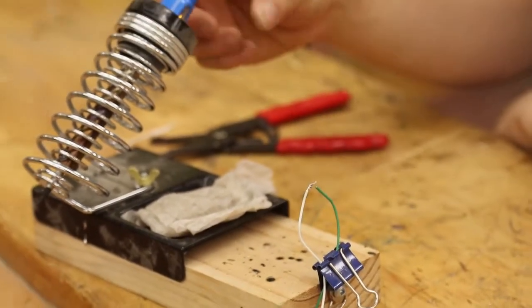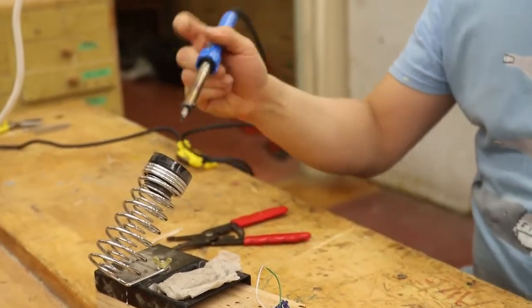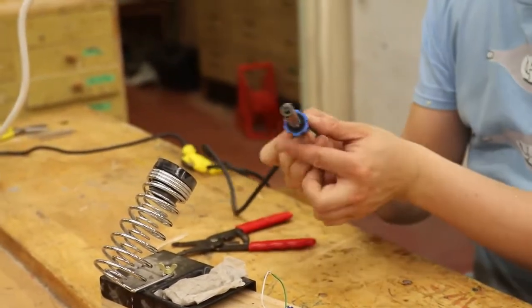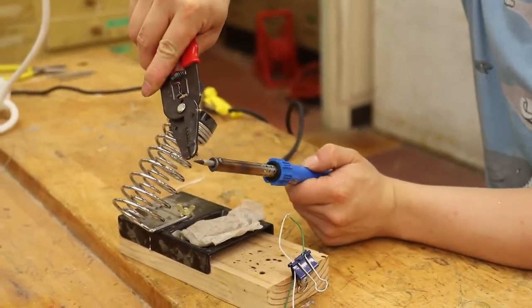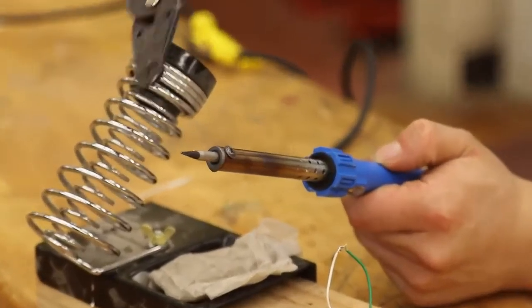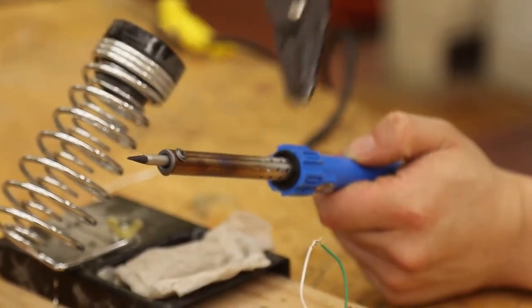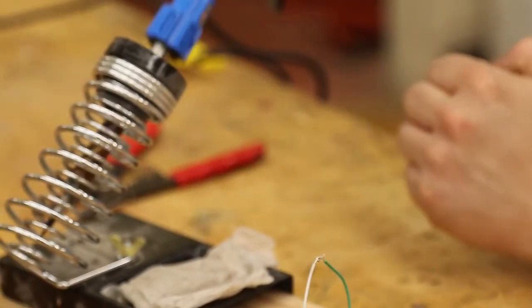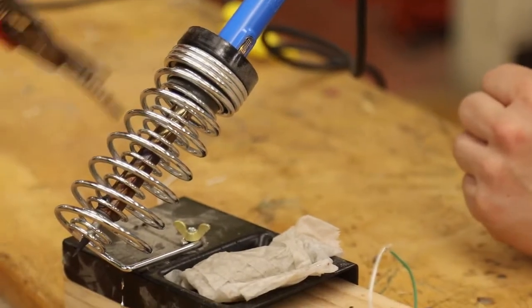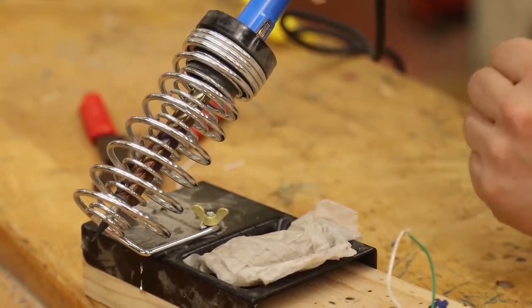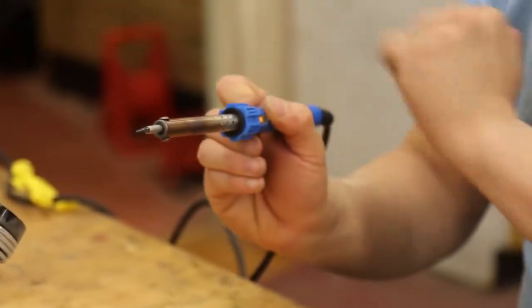When you're using the soldering iron, you essentially hold it the same way that you hold a pencil. So that's how I hold my pencil. Just be careful: the tip is hot, don't touch it. This area here is also hot, don't touch it. Because you're putting your soldering iron in a stand, this coil will also get hot, don't touch it. The only safe place to hold it is in that handle, the plastic handle.